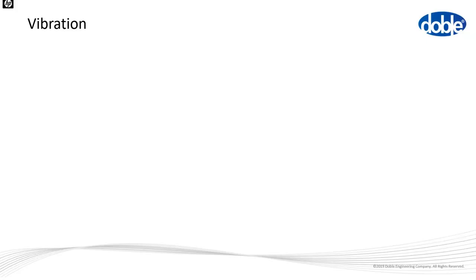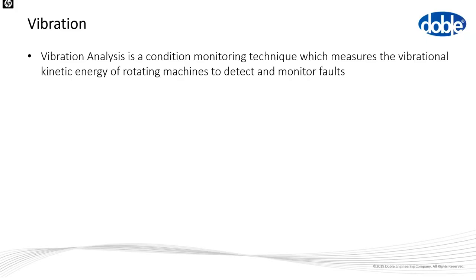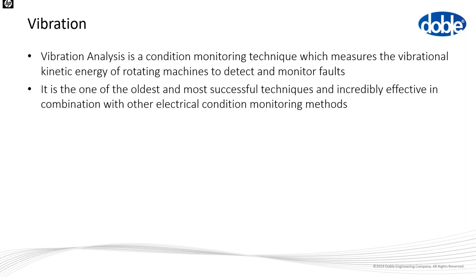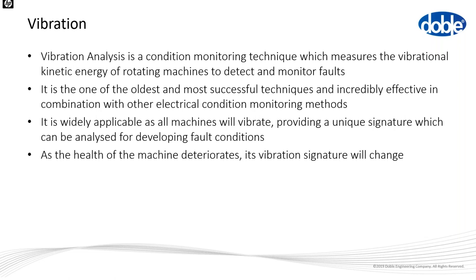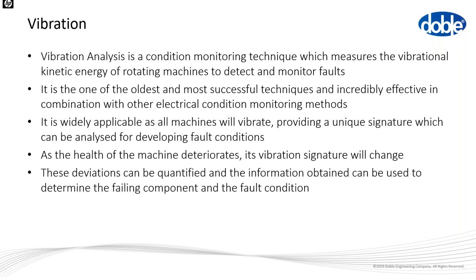Moving on to vibration monitoring — measuring the vibration kinetic energy of rotating machines. It's one of the simplest, oldest, and most successful techniques, especially when used in combination with other monitoring methods. It's widely applicable because all machines vibrate, and each machine vibrates with a unique signature that can be analysed for developing fault conditions. As the vibration signature changes, it gives a good indication of changes developing inside the machine. By quantifying those deviations you can determine which component is failing and what the fault condition is.